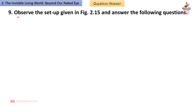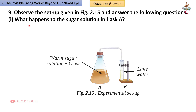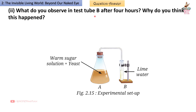Question 9: Observe the setup in figure 2.15. In flask A, warm sugar solution plus yeast is present; in test tube B, lime water is present. First — what happens to the sugar solution in flask A? Answer: Yeast ferments the sugar solution; sugar gets converted into alcohol and CO2 gas.